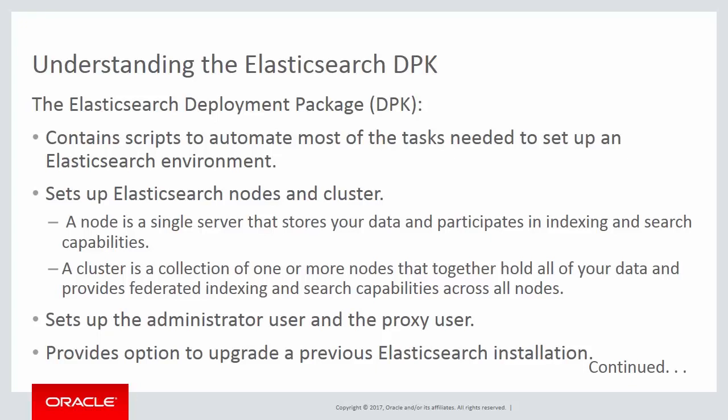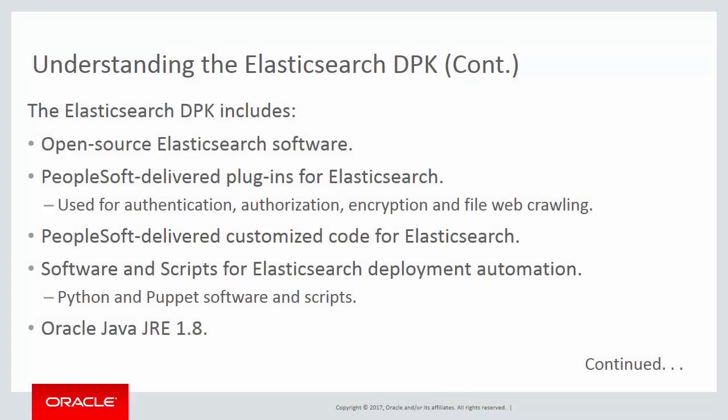Refer to the PeopleSoft Deployment Packages for Elasticsearch Installation, doc ID 2205540.2 on My Oracle Support, for information on the revision that supports your upgrade. The Elasticsearch DPK includes the open source Elasticsearch software, PeopleSoft-delivered plugins for Elasticsearch including plugins for authentication, authorization, encryption, and file web crawling, PeopleSoft-delivered customized code for Elasticsearch, Python and Puppet software with PeopleSoft-developed scripts that automate Elasticsearch deployment, and Oracle Java JRE 1.8.